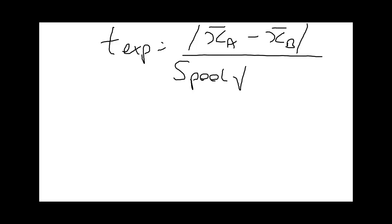You calculate the experimental value of t by taking the difference between the two mean values: the mean of data set A minus the mean of data set B. Then we have this averaged standard deviation for the two sets of data, called S-pooled. Divide that by the square root of one over the number of observations of data set A plus one over the number of observations in data set B.